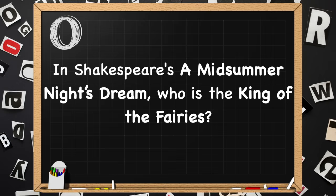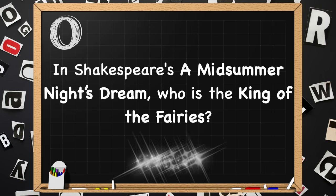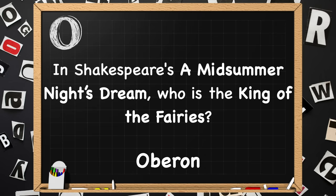Beginning with O. In Shakespeare's A Midsummer Night's Dream, who is the king of the fairies? That is Oberon.